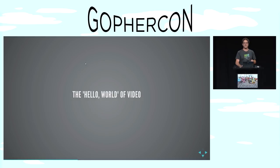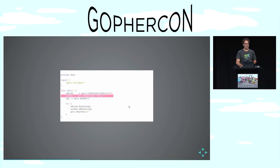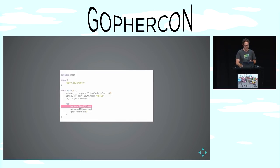Let's take a quick look at the hello world of video. We start with package main, same as any Go program. We import GoCV from the gocv.io namespace. In our main function, we call GoCV.videoCaptureDevice with 0 to open camera 0. We call GoCV.newWindow to open a window so we can see what the camera sees. Then image equals GoCV.newMat creates an image matrix. In an infinite loop, we call webcam.read into that image, then window.imShow to display it.